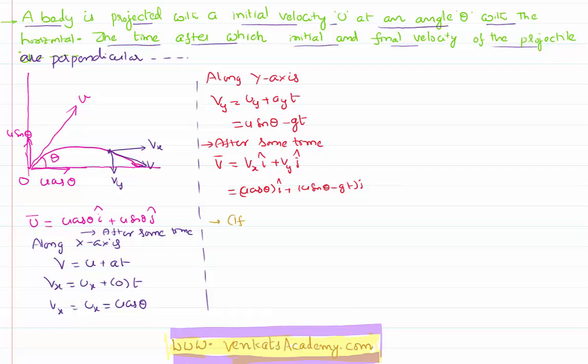So, if this v bar is perpendicular to u bar, suppose these are vectors. If the two vectors are perpendicular, their dot product has to be equal to zero. So, u bar dot v bar has to be zero. This is because, you know, a dot b is nothing but equal to ab cos theta. If theta is 90, a dot b becomes automatically zero.